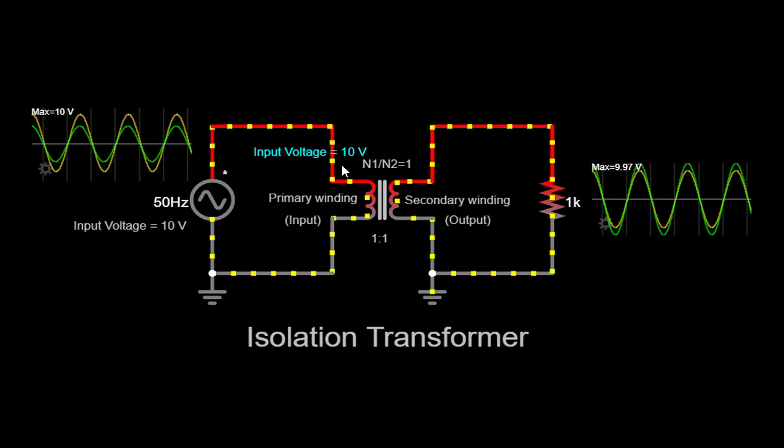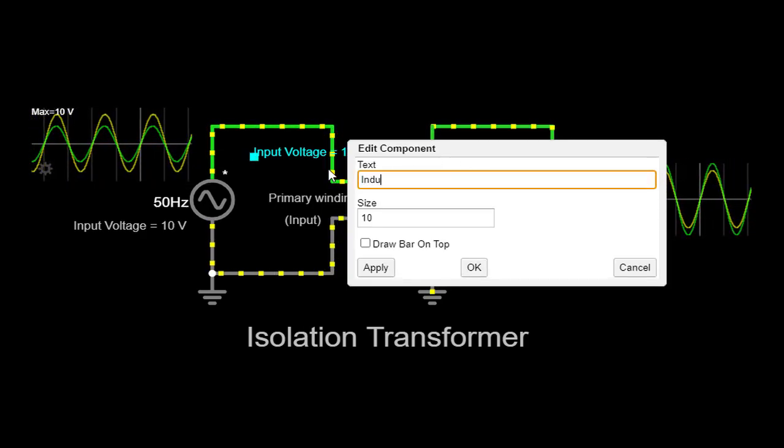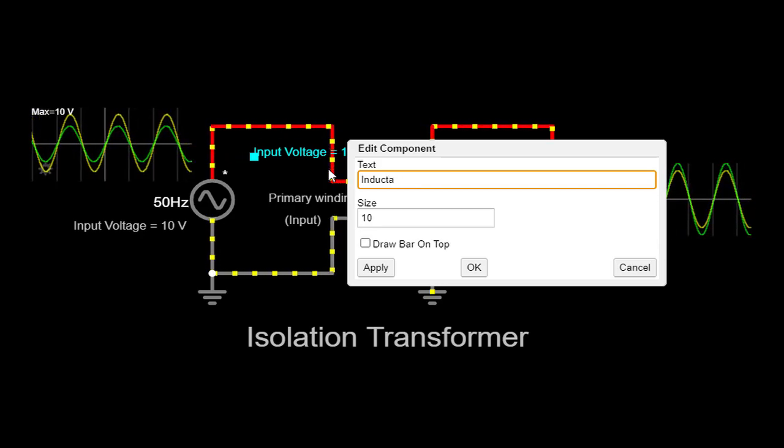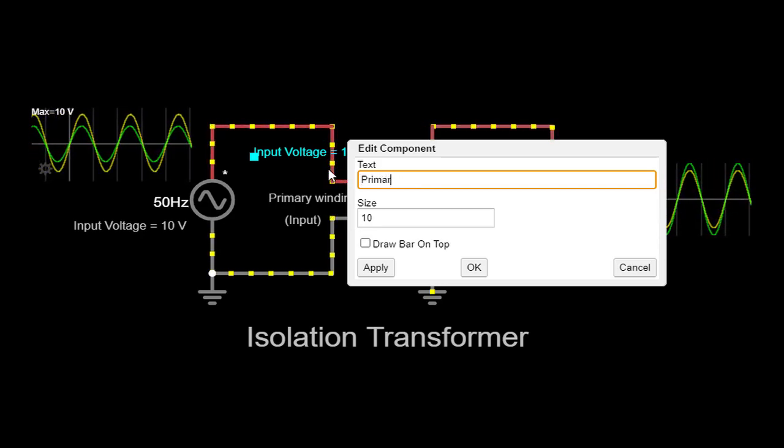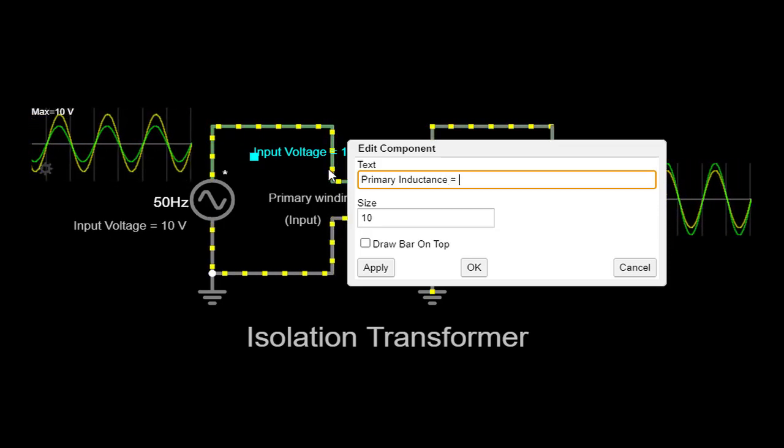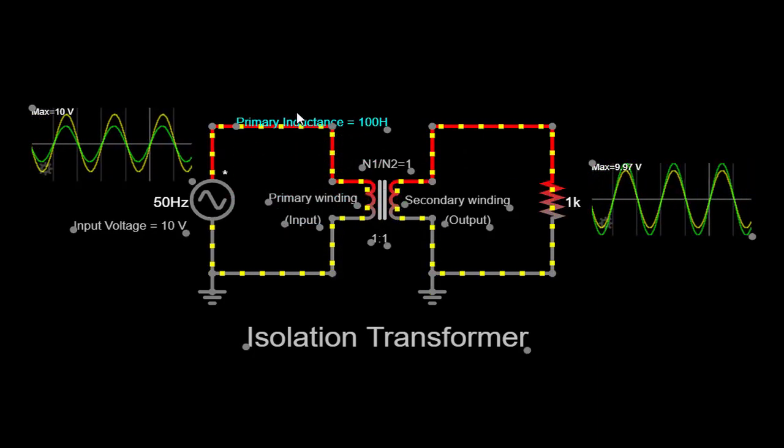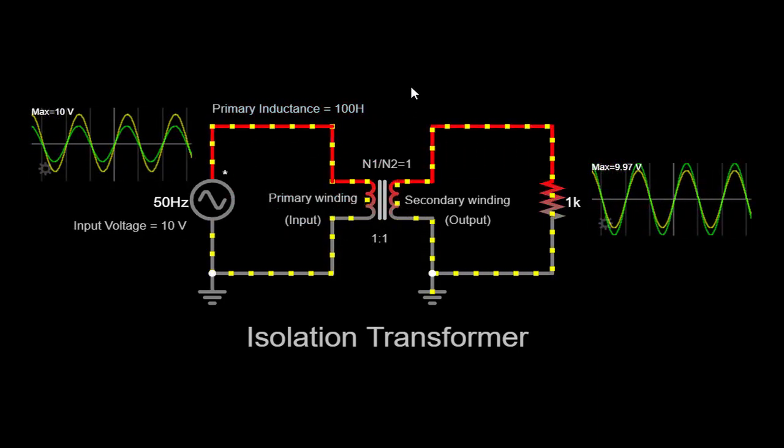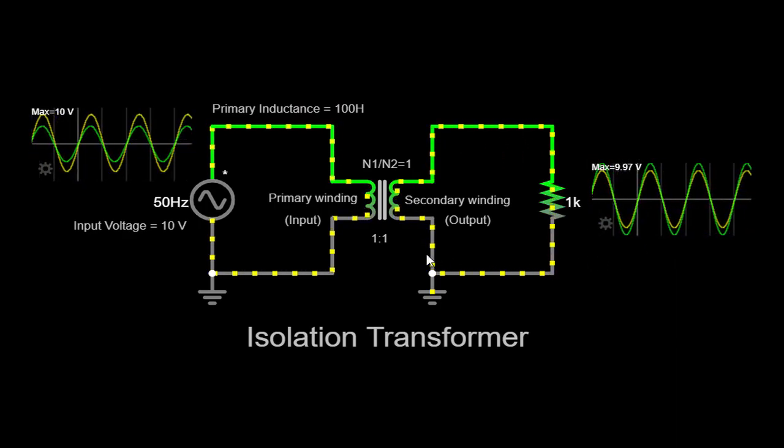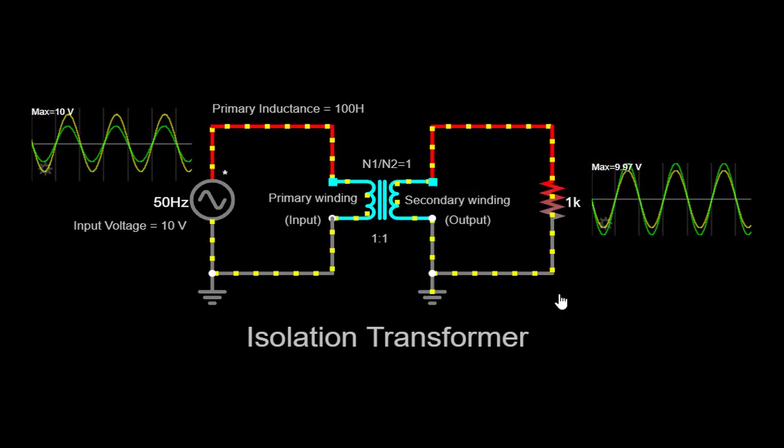Turns ratio: The turns ratio of 1, N1 by N2 equals 1, indicates that the number of turns on the primary and secondary windings is equal. This ratio affects the voltage transformation between the primary and secondary sides of the transformer. In our case, the output voltage is measured at 9.97 volts AC.